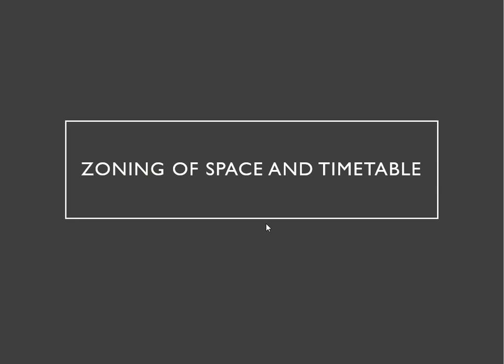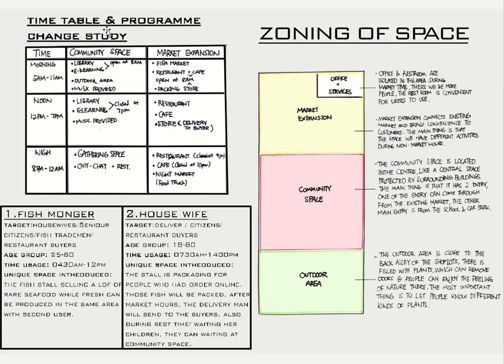Let's look at the zone needs, space timetable, and program change study. This is the user information and the joining of space shown in four different colors. The white color represents office and service — office and restaurant are isolated in this area. During market hours, there will be more people, and the restaurant is conveniently placed for users. For the market, as mentioned, it connects to the existing market to bring convenience to customers. The key feature is that the space will have different activities during non-market hours.